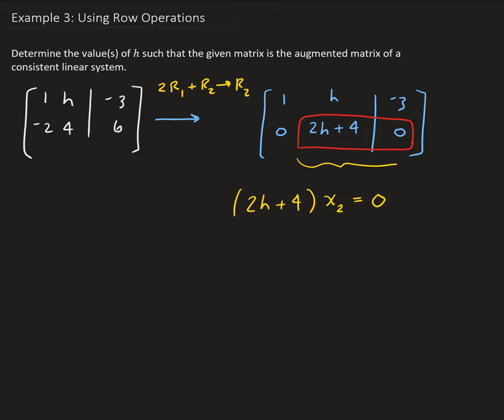In this case, H can be anything because we have 0 on the right hand side. So it doesn't matter what H is, we can always find a solution and that is x₂. x₂ could be equals to 0.